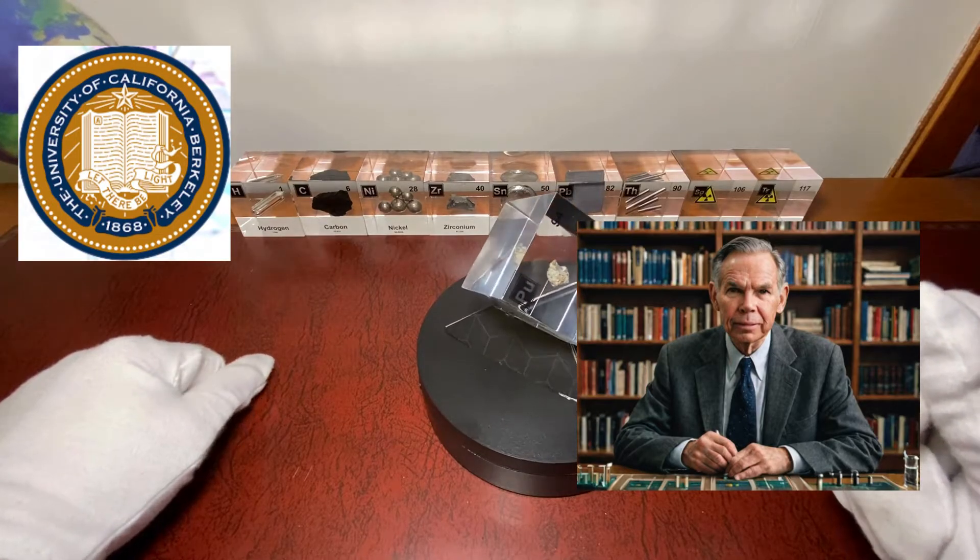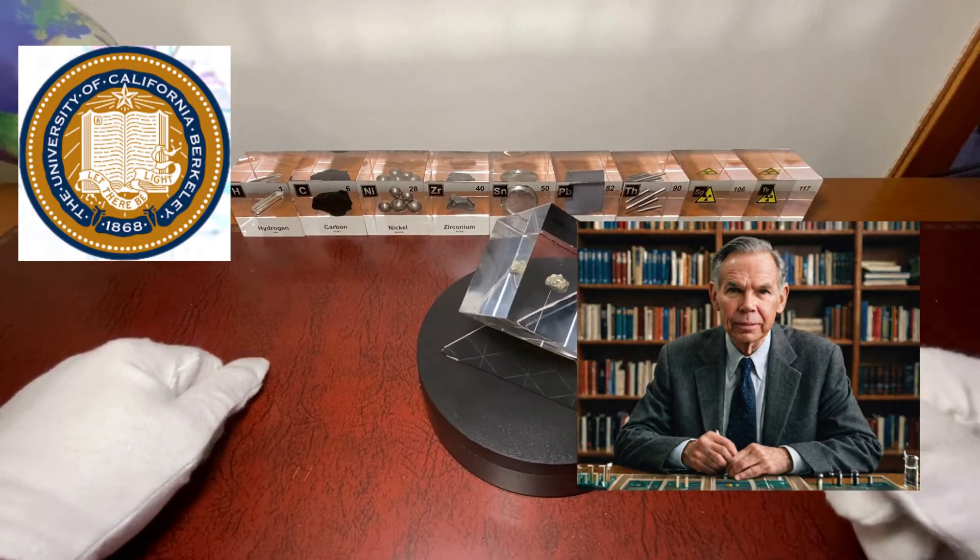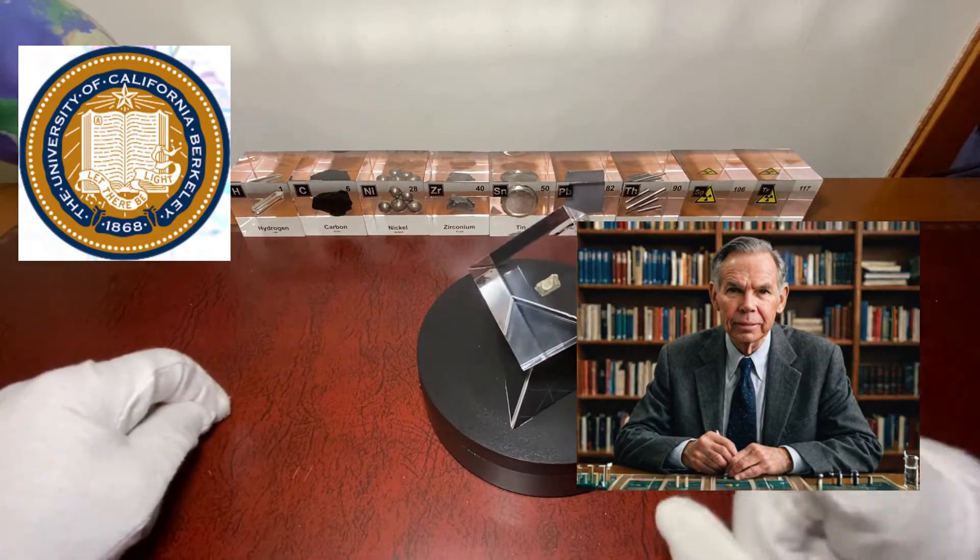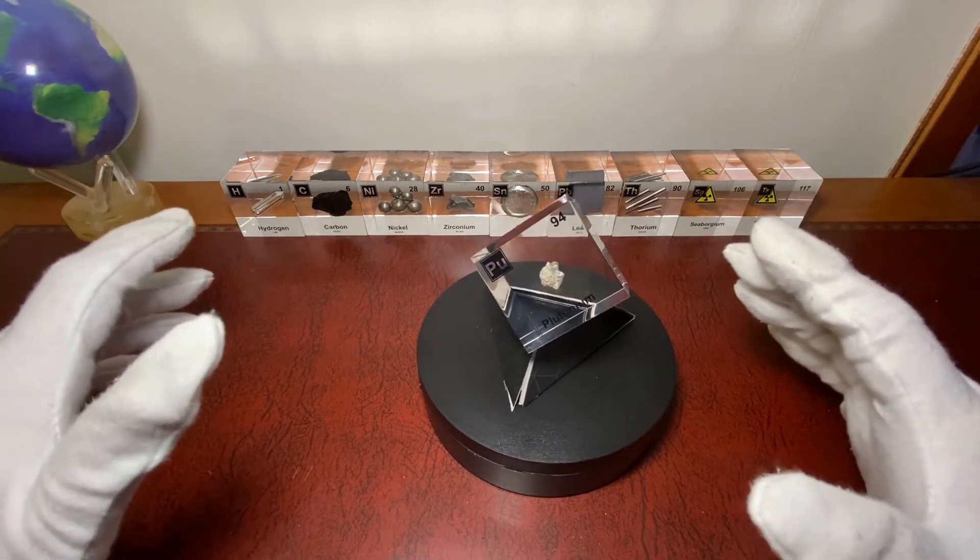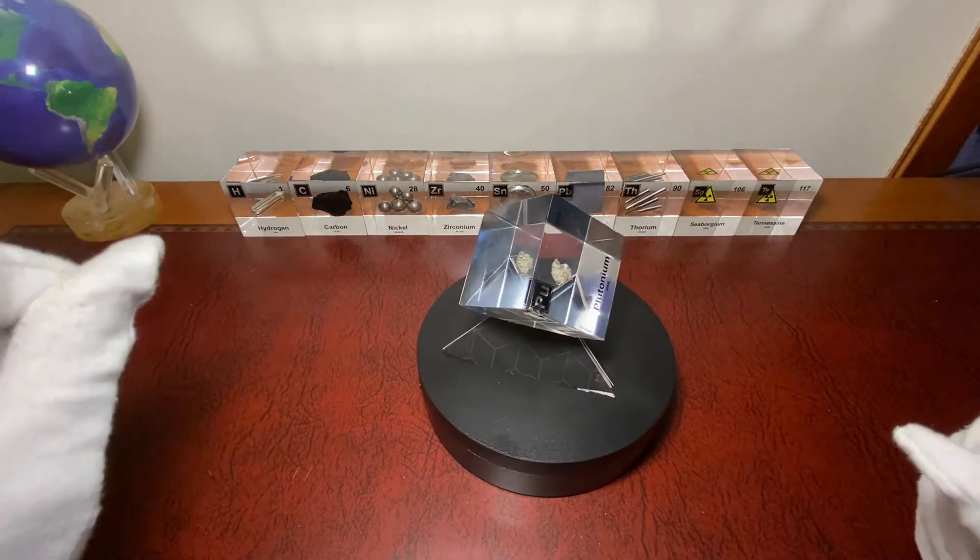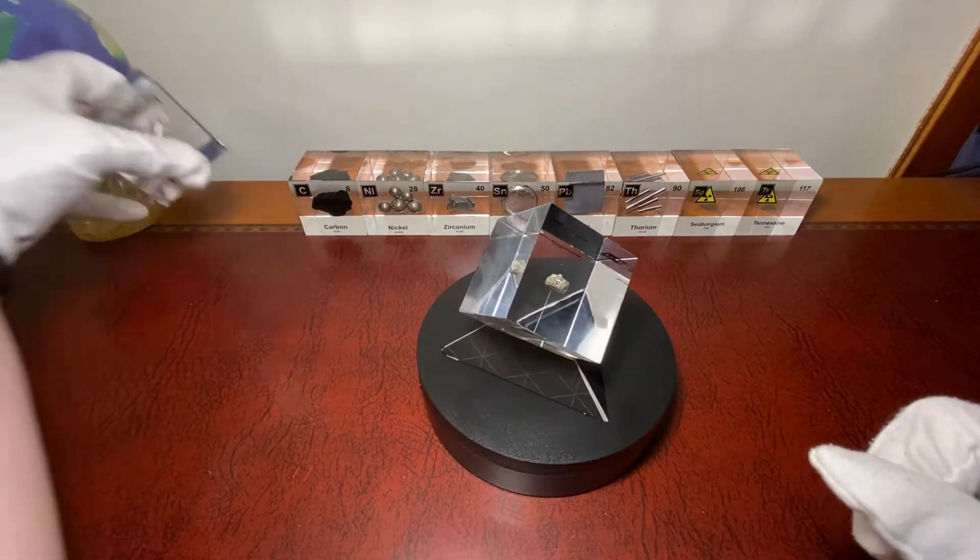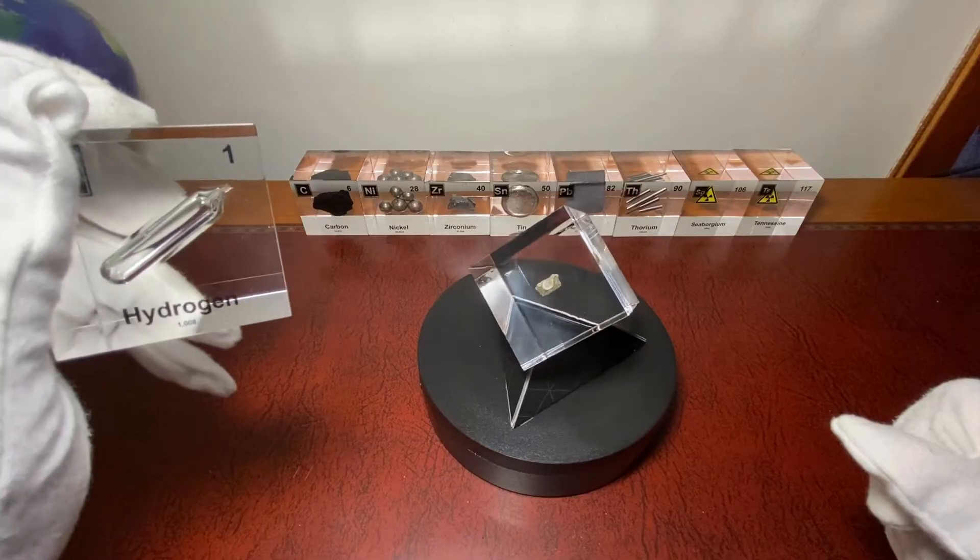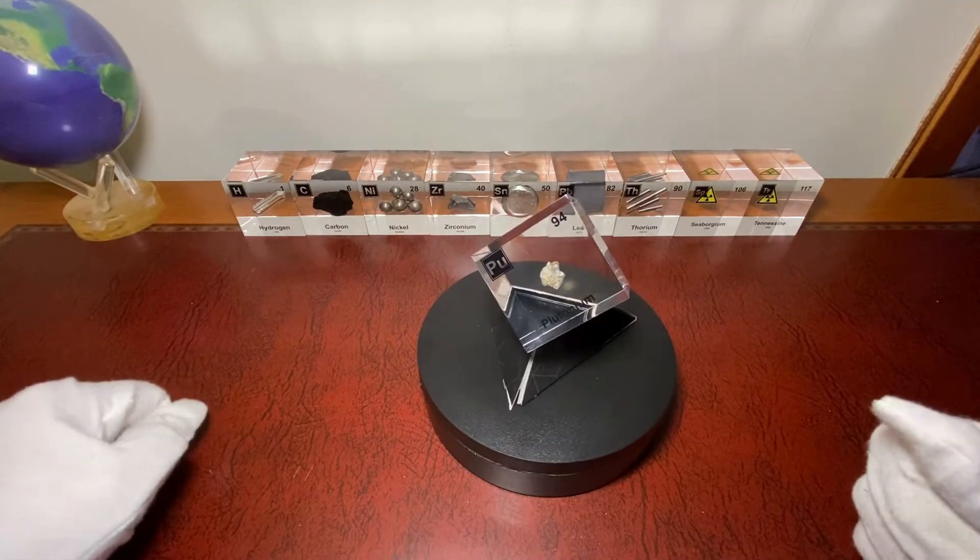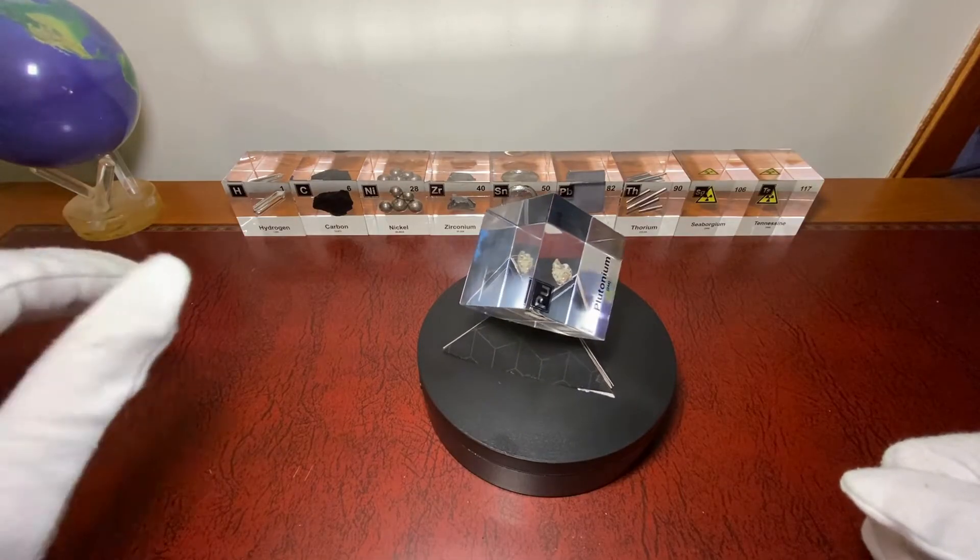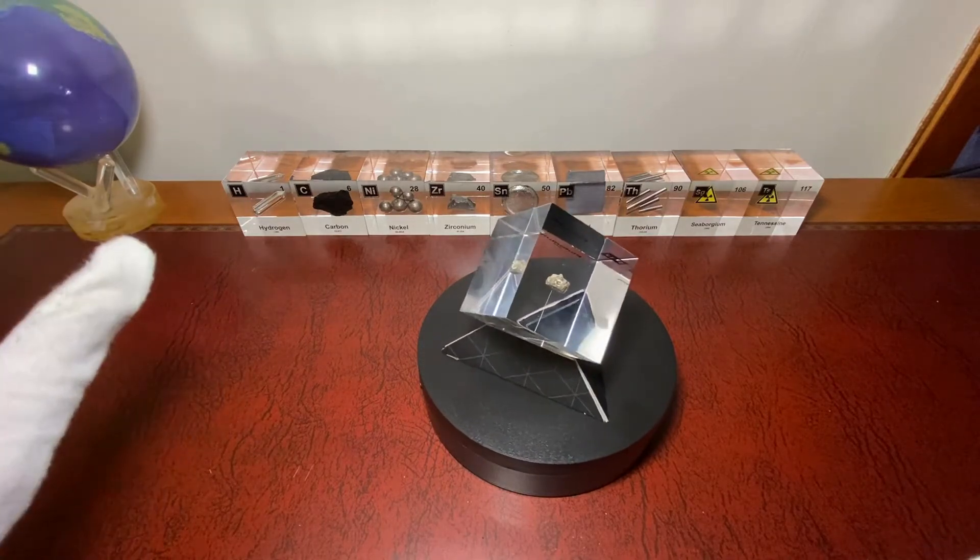It was first discovered in the cyclotron at the University of Berkeley, California by Glenn T. Seaborg. We remember him from last week's episode about seaborgium. How did they create this element? They did this by bombarding uranium with deuterons and neutrons. A deuteron is a particle consisting of a proton and a neutron. You can add neutrons to hydrogen and if you strip away the electron, that's when you get a deuteron.